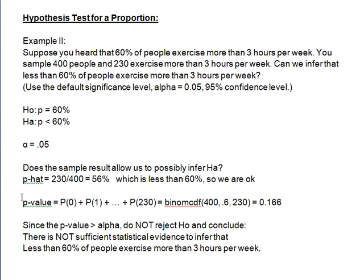Let's calculate our p-value. Our sample result was 230. The p-value is the probability of obtaining that sample result or more extreme. We're trying to infer less than 60%, so more extreme means even lower counts — 230, 229, 228, 227, and so on. So the p-value is the probability of obtaining 0, 1, 2, all the way up to 230 people who exercise more than three hours a week. We add all those probabilities up. Since you either exercise more than three hours or you don't, it's a binomial situation — exactly a binomial cumulative distribution up to 230.